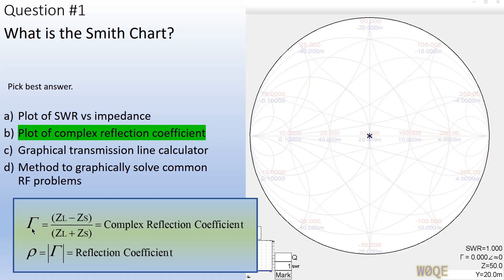The plot of complex reflection coefficient — gamma is the complex reflection coefficient, and it's defined like this, although a lot of times in formulas you'll see 50s replaced for Zs because we usually use it in a 50 ohm circuit. Rho is a reflection coefficient, and some people don't draw any distinction between these, but rho is a scalar number that runs between 0 and 1, while gamma has a magnitude between 0 and 1 and a phase between 0 and 360 degrees.